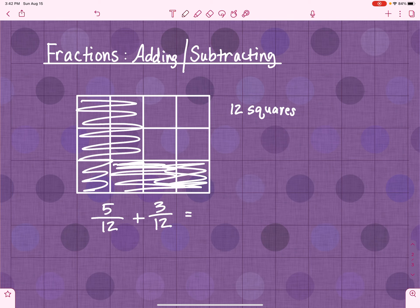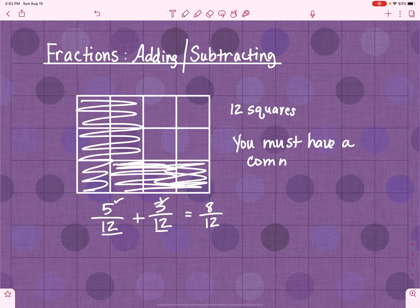Because these have a common denominator, I know that I've got 5 and 3, which is 8 twelfths. So, the key you have to remember when you're adding and subtracting fractions, you must have a common denominator.